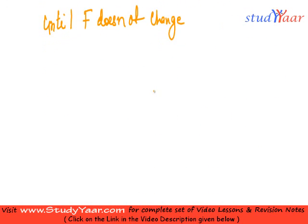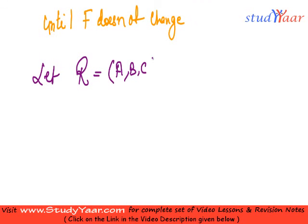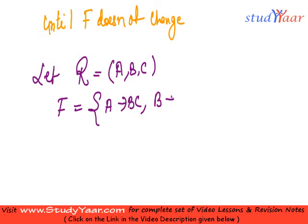Now let's take an example to understand what is happening in this algorithm. Let my relation be of type A, B, C — these are the attributes in my relation. And I have a set of functional dependencies F given by: A → BC, B → C, and A → B.